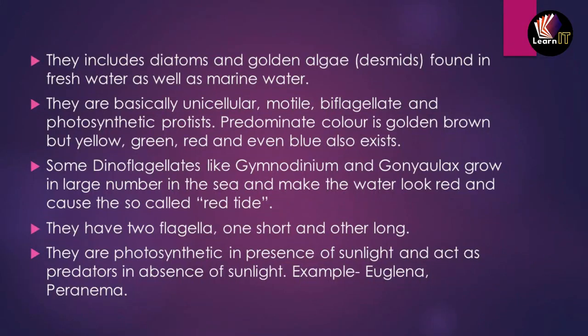Protista also includes diatoms and golden algae, also known as desmids, found in both fresh water and marine water. They are basically unicellular and motile — they can move from one place to another. They are biflagellate, meaning they have two flagella, and are photosynthetic. Their predominant color is golden brown, but yellow, green, red, and blue varieties also exist.